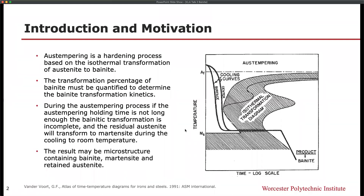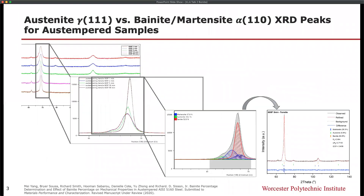Austempering is a hardening process which is achieved through the use of a heat treatment, and in steels results in the formation of bainite. The transformation percentage of bainite must be quantified in order to determine the bainite transformation kinetics associated with the austempering thermal treatment and composition of a given steel. Herein, we used XRD as a baseline and Rietveld refinements to identify the amount of martensite, austenite, and bainitic ferrite present as a function of the austempering condition.